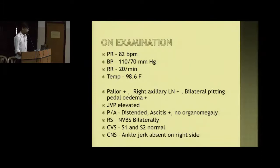On examination, this gentleman had normal vitals but had pallor and a significant right axillary lymph node, with bilateral pitting pedal edema. His JVP was elevated. He had a distended abdomen due to ascites with no organomegaly, normal vesicular breath sounds bilaterally, normal S1 and S2, and his right ankle jerk was absent.